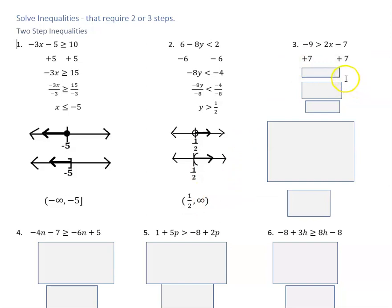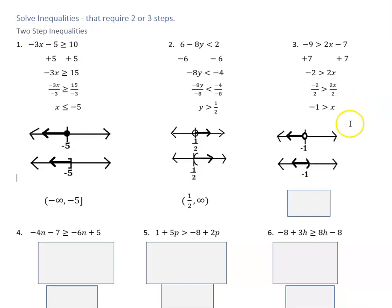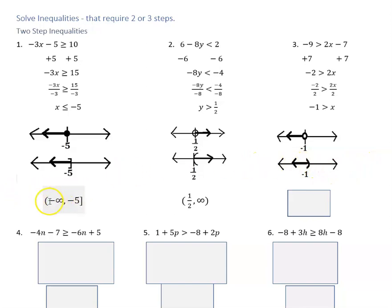In the next one, we add seven to both sides to isolate the x term, then divide both sides by two. Since we're dividing by a positive we do not reverse the direction of the arrow. What this tells us is x is less than negative one — even though x is on the right, the inequality is pointing at x, so everything is less than negative one and the graph goes to the left. There's no equal-to part so it's an open circle or parenthesis, opening to the left. In interval notation we go from negative infinity to negative one with a parenthesis, since there's no equal-to sign.